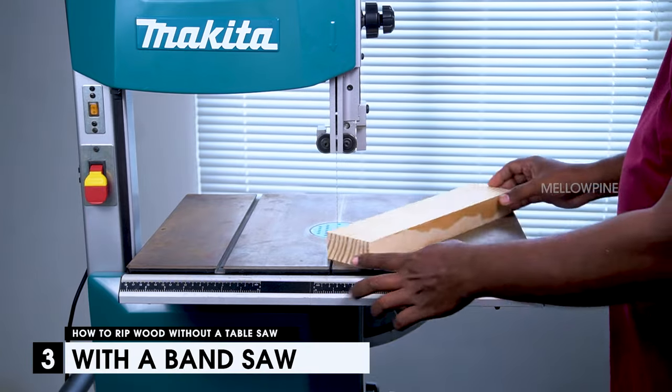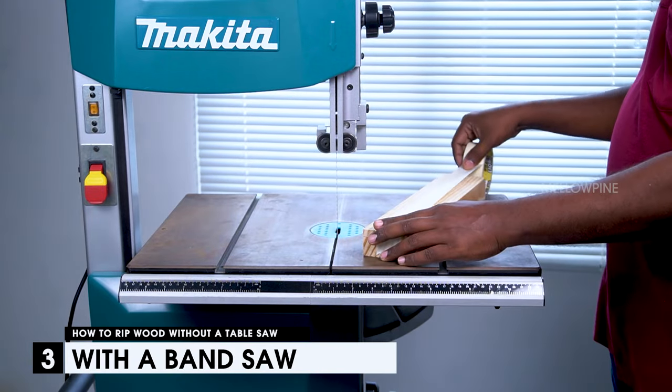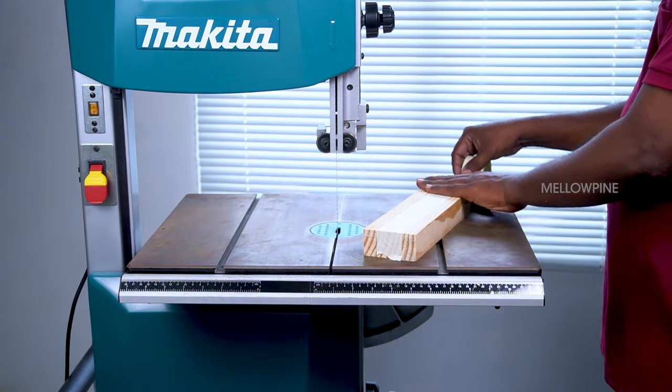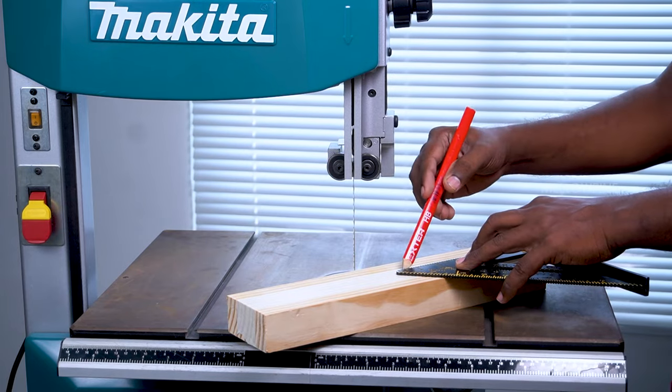The third and final method is by using a bandsaw. Place the wood to be ripped on the bed of the bandsaw. Using a speed square and a pencil, draw the ripping line.